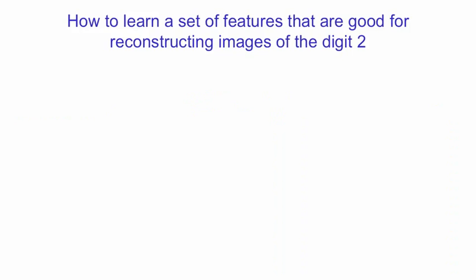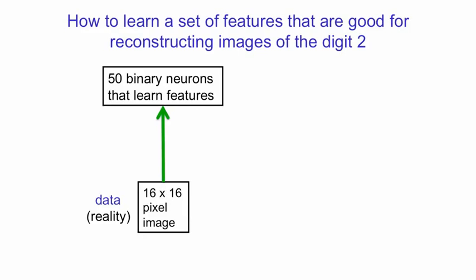I'm now going to show how a relatively simple RBM can learn to build a model of images of the digit 2. The images are 16 pixels by 16 pixels, and it has 50 binary hidden units that are going to learn to become interesting feature detectors. So when it's presented with a data case, the first thing that it does is use the weights on the connections from pixels to feature detectors to activate the feature detectors.